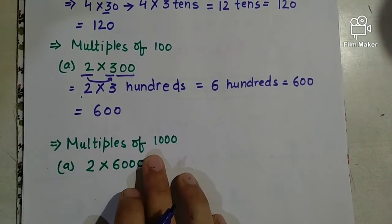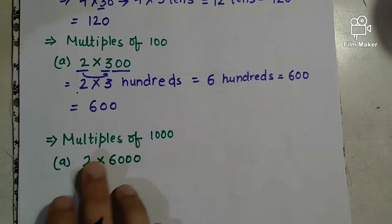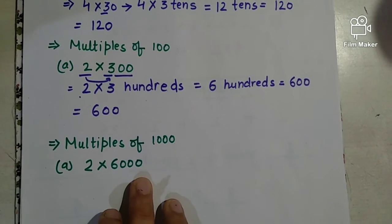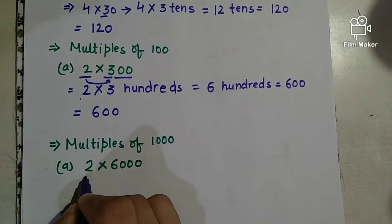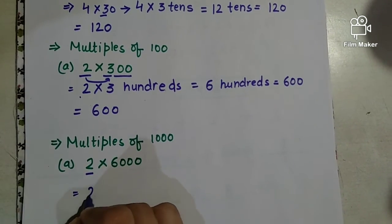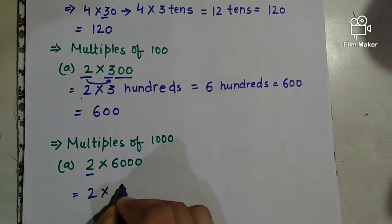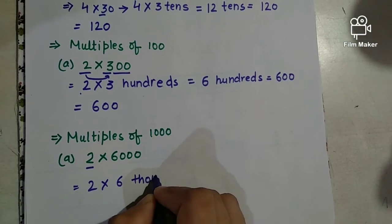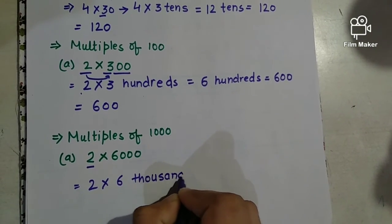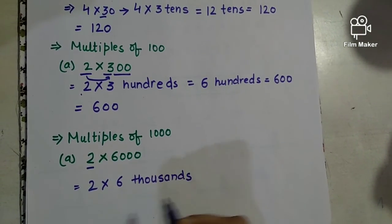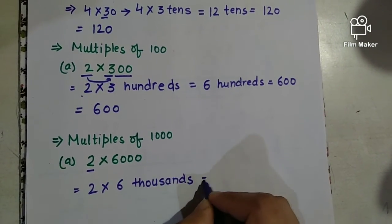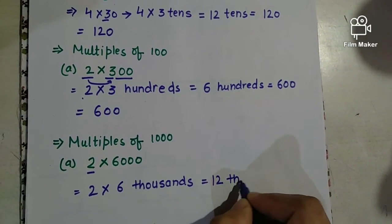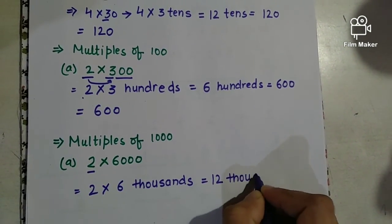Now let us understand multiplication with a thousand. If we multiply two into six thousand — two sixes are twelve, and there are three zeros. So we get twelve thousand.